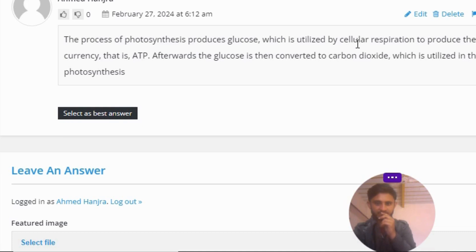...which is utilized by cellular respiration to produce the energy currency, that is ATP. Afterwards, the glucose is then converted to carbon dioxide, which is utilized in the process of photosynthesis. So that's the correct answer to the question.